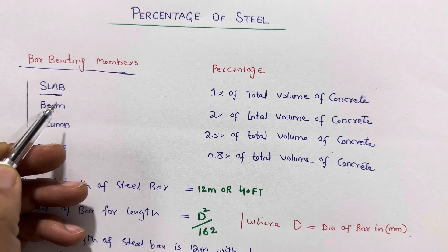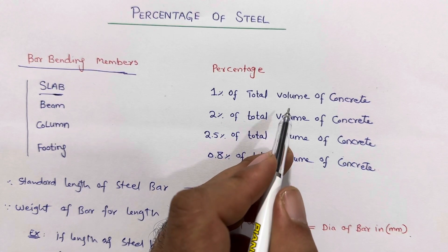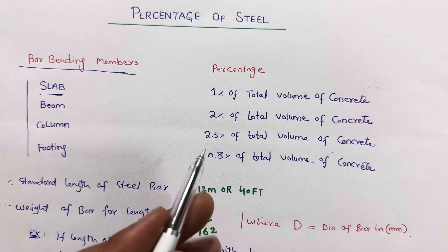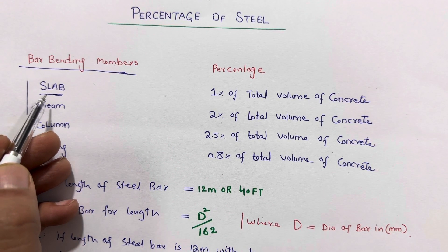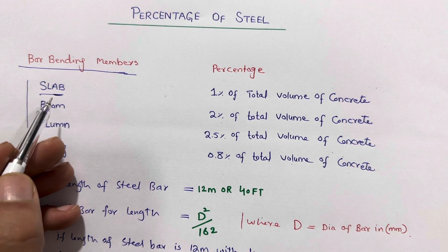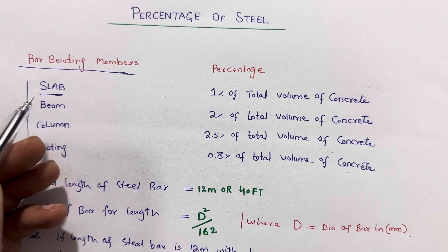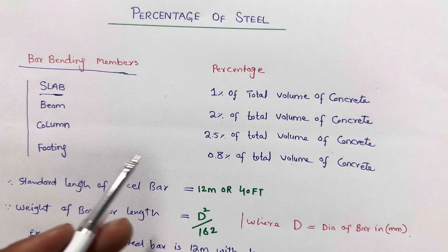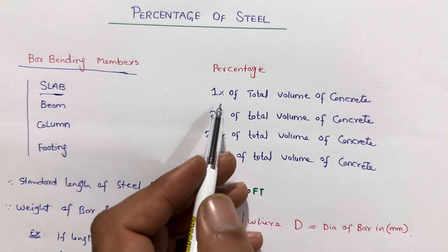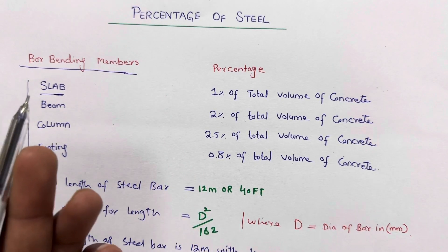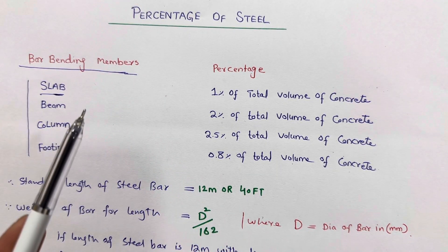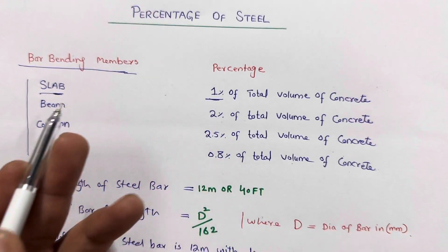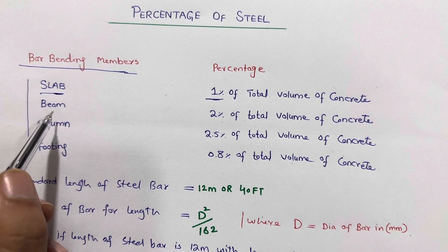In a slab, which is an RCC structure, you can use one percent of the total volume of concrete. It means if the slab concrete volume is anything, one percent of that volume is steel used in the construction of an RCC slab. These values come from the thumb rule, and you can also use BN data recommendations for more accurate values. For slab construction we use one percent of the total volume of concrete — length of the slab, width of the slab, and thickness of the slab gives the total volume, and from that we take one percent as steel volume.